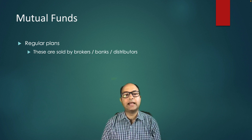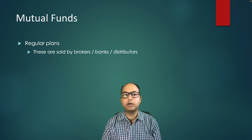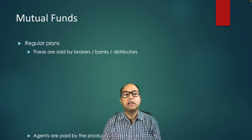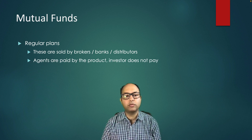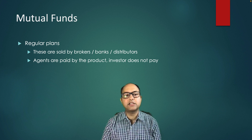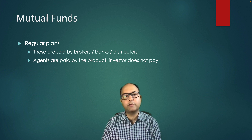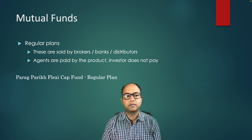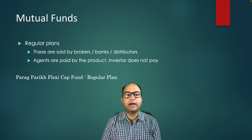Regular plans are always sold by some distributor, broker, or your bank. You do not pay anything directly for that; however, these agents get paid from the product they are selling. So the alignment of interest may not be there. Let's look at one example — Parag Parikh Flexi Cap Fund.